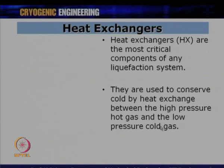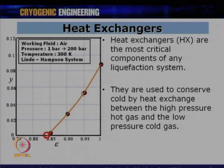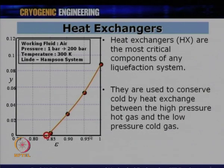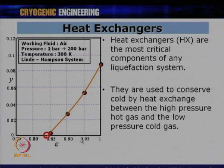Heat exchangers are used to conserve cold by heat exchange between the high-pressure hot gas and the low-pressure cold gas. This graph shows the variation in yield y with the effectiveness ε. If ε is 100%, you get the highest yield of around 0.09. As ε drops from 100% to 95% to 90%, the yield comes down. If ε is less than 85%, the yield is absolutely zero.